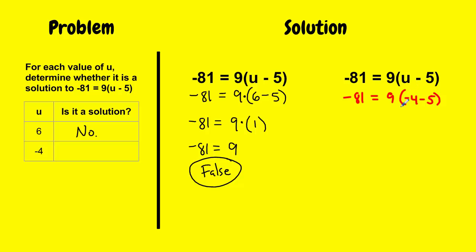And whenever I say the quantity, that just means whatever I say after that is going to be in parentheses. So the quantity u minus 5 means that's in parentheses. So here I have 9 times this quantity, those two things.